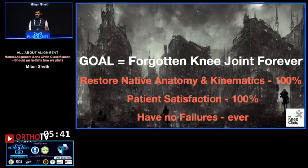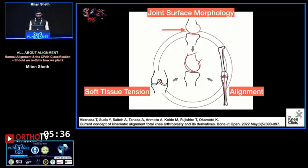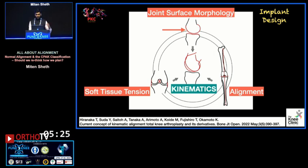All of this keeping in mind that every knee is unique. There are three impact factors and all of them affect kinematics. In spite of implant design constraints and limitations, we would ideally want to achieve true bone resurfacing for the trochlea.